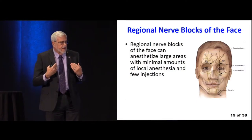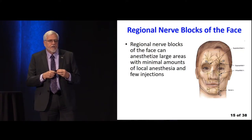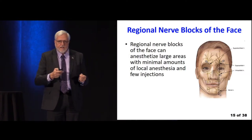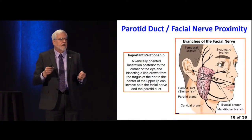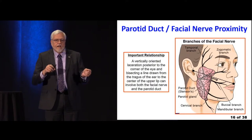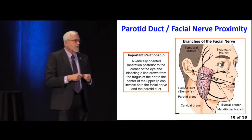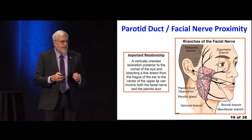If you're going to suture lacerations of the face, make sure you're comfortable with the anatomy — where the nerve blocks of the face are. You can anesthetize large areas with minimal amounts of local anesthesia and few injections. A vertically oriented laceration posterior to the corner of the eye, bisecting a line drawn from the tragus of the ear to the center of the upper lip, can involve both the facial nerve and the parotid duct. So if you suture a lot of facial lacerations, it's important to know the anatomy and the landmarks.